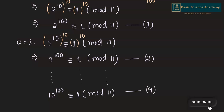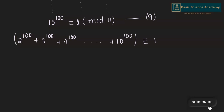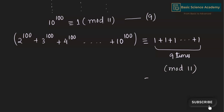Now adding equations 1 through 9 gives 2 to the power of 100 plus 3 to the power of 100 plus 4 to the power of 100, up to 10 to the power of 100, is congruent to 1 plus 1 plus 1, nine times, mod 11, which is congruent to 9 mod 11.